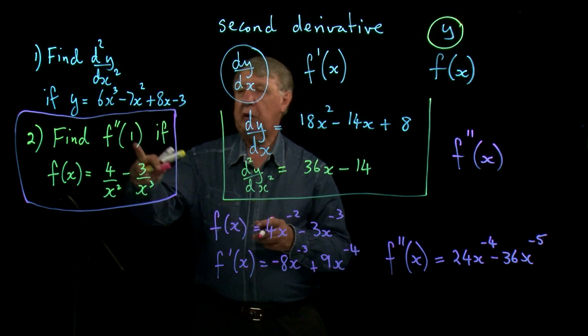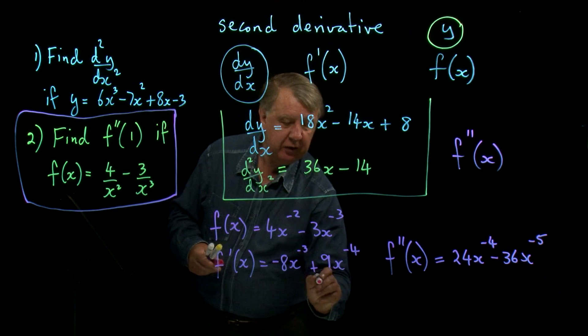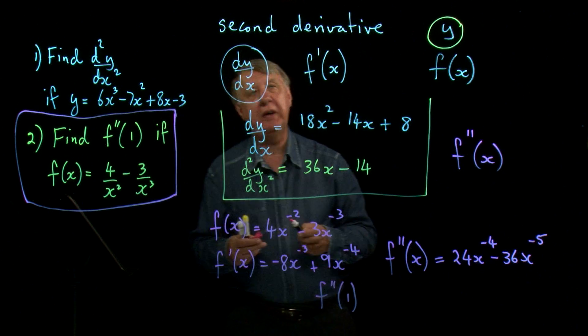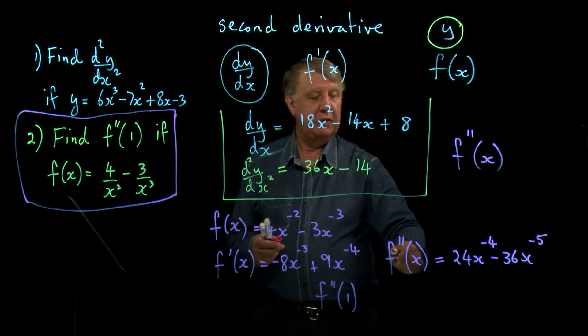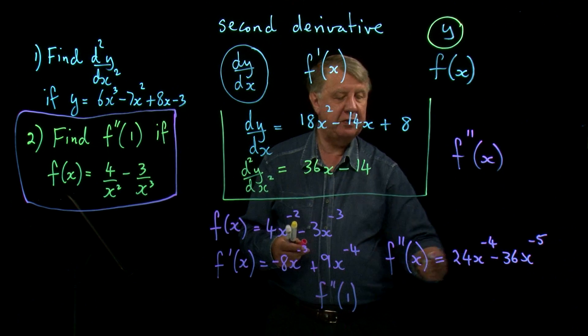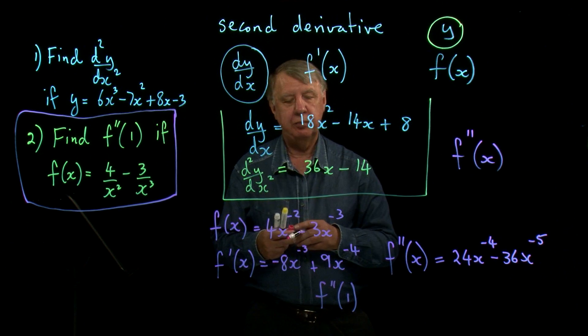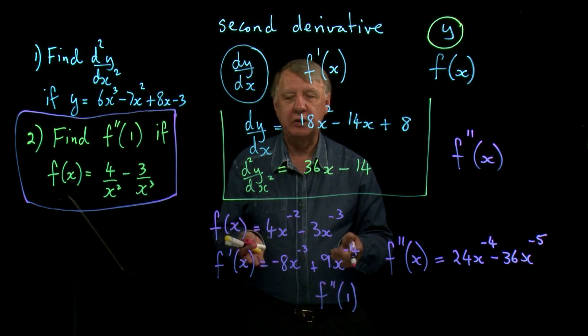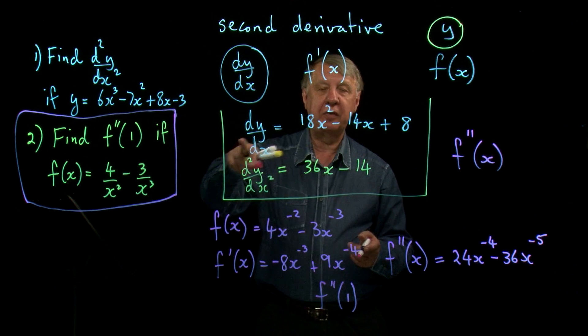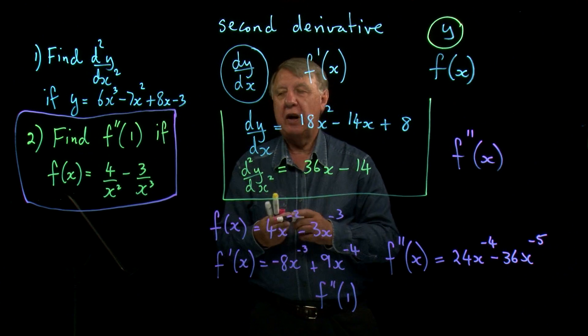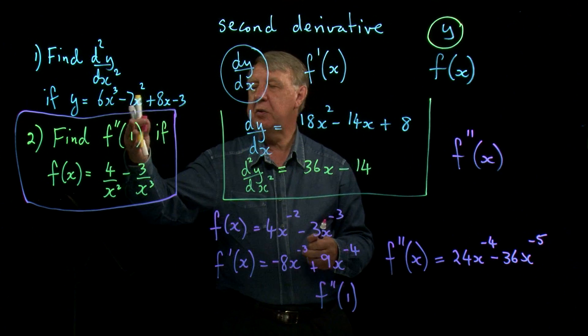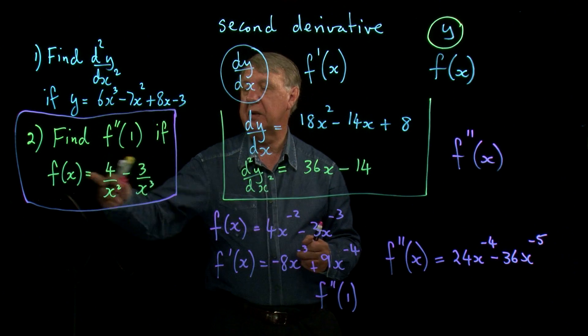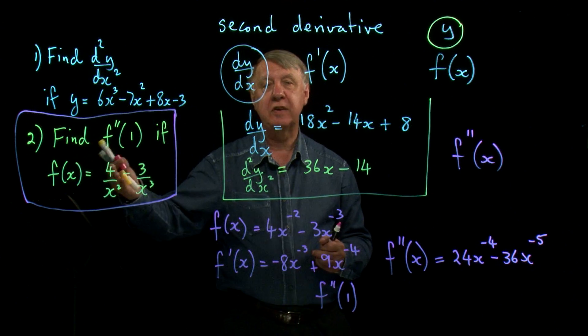Now, the question says, find f double dashed 1. What does that mean? It means take this and substitute x equals 1. One of the powers of this notation is it saves us words. If I was using the old-fashioned notation, I'd have to say, find dy by dx if x is equal, or find d2y by dx squared, even if I was doing this one, when x is equal to 1. So it's a whole sentence.